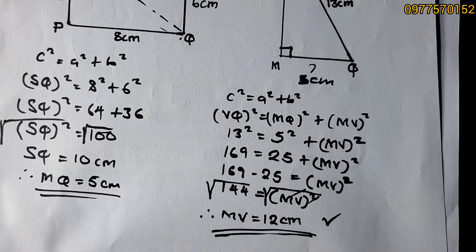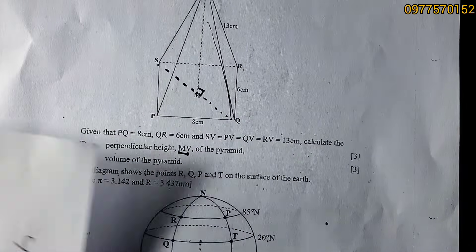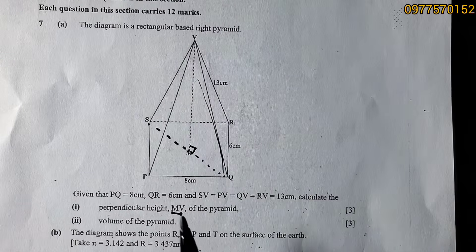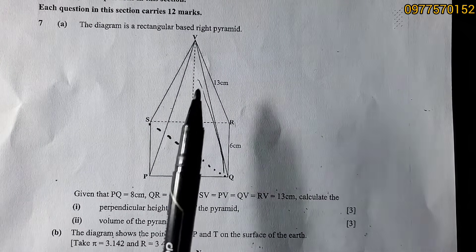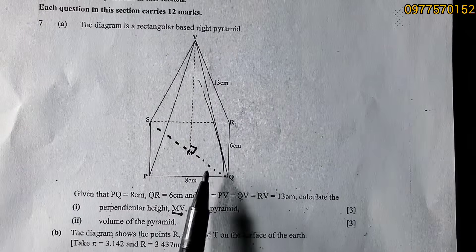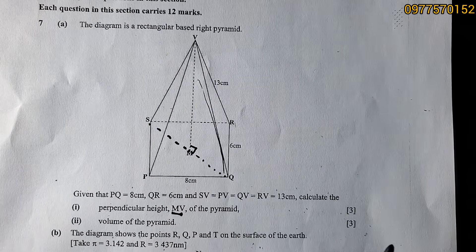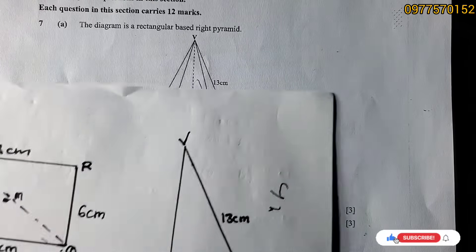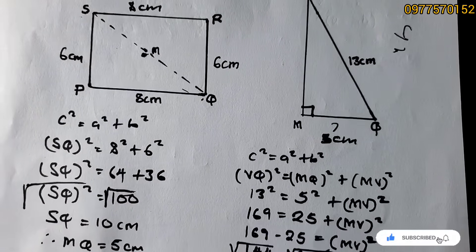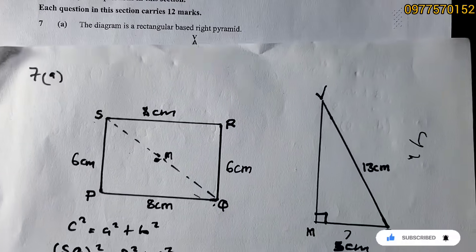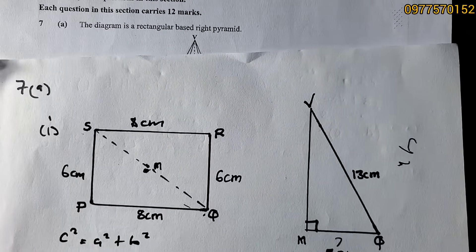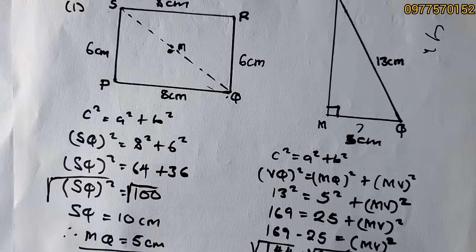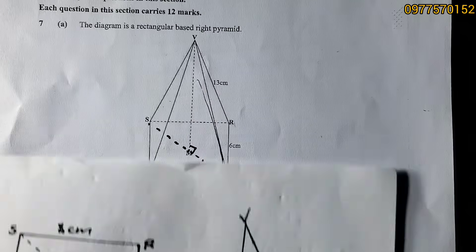That is the final answer for part (i): the perpendicular height is 12 cm. Note that when you look at this problem it can seem confusing, but if you understand the concept of perpendicular height, slant height, and the base, it becomes straightforward. Quickly sketch the figure before solving.